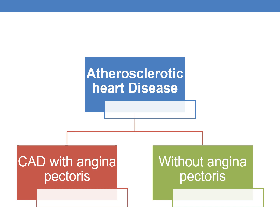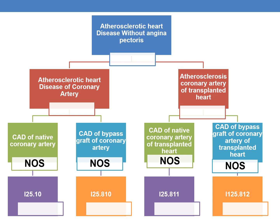Atherosclerotic heart disease is categorized into two types: with angina pectoris and without angina pectoris. It is also broadly categorized based on native heart versus transplanted heart, and whether the coronary artery is a native coronary artery or a bypass graft. For CAD of native coronary artery, the default code is I25.10.